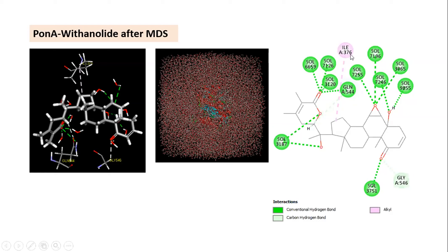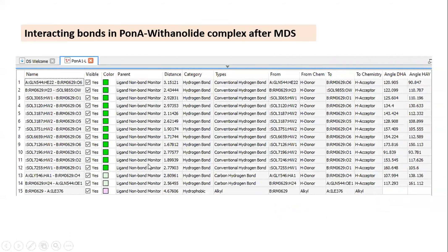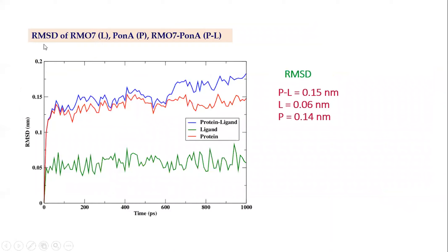Beside the amino acids of PonA1 protein, only three amino acids participated: isoleucine 371 forming an alkyl bond, and glutamine 544 forming a conventional hydrogen bond. Carbon-hydrogen bonds were also formed in the interaction between Withanolide A and PonA1 protein. Glycine residues also interacted to form carbon-hydrogen bonds. A total of 15 different types of interactions were formed involving water molecules, the ligand, and amino acid residues.